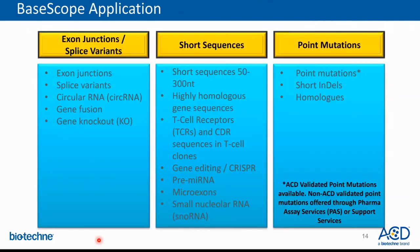We divide our target-specific applications in three broad categories: exon junction or splice variant detection, short sequence or homologous sequence detection, and point mutation detection. For exon junction or splice variant detection, we can design probes for detection of splice variants, isoforms, circular RNAs, gene fusions, and confirmation of gene knockouts. These probes usually tend to be about 1 ZZ pair in length.